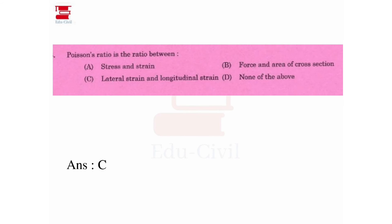Poisson's ratio is the ratio between lateral strain and longitudinal strain. The modulus of elasticity is force divided by area of cross section — that is stress and area. The correct answer for Poisson's ratio is option C: the ratio of lateral strain to longitudinal strain.